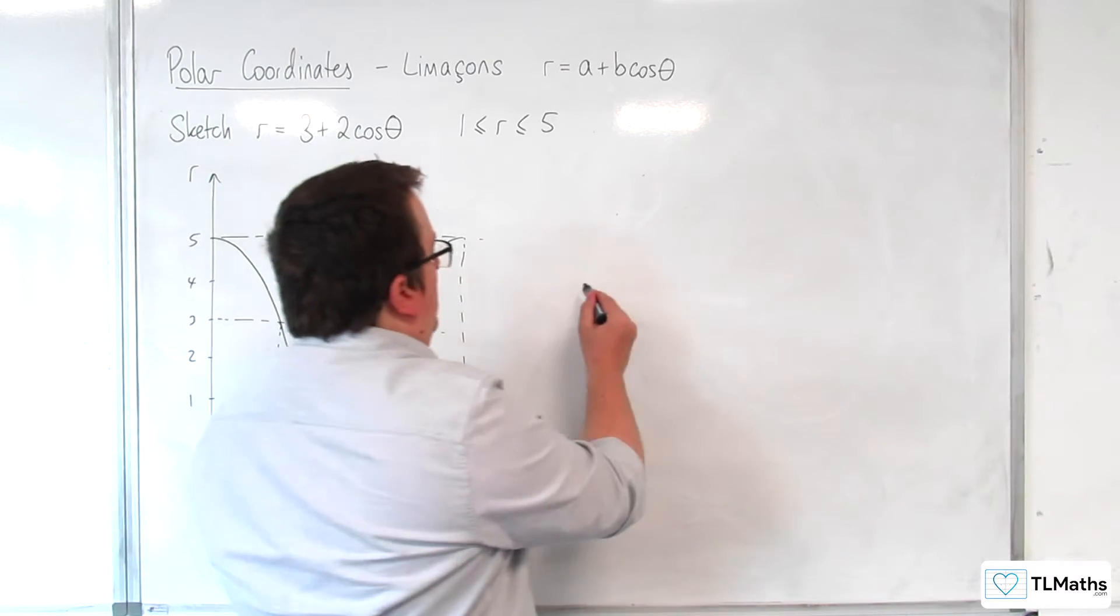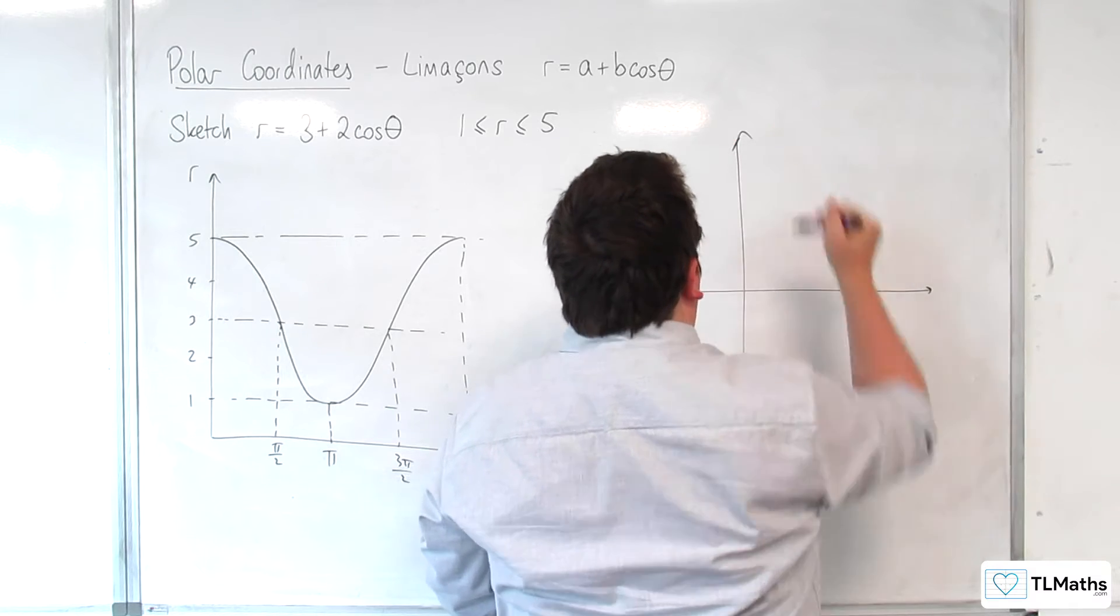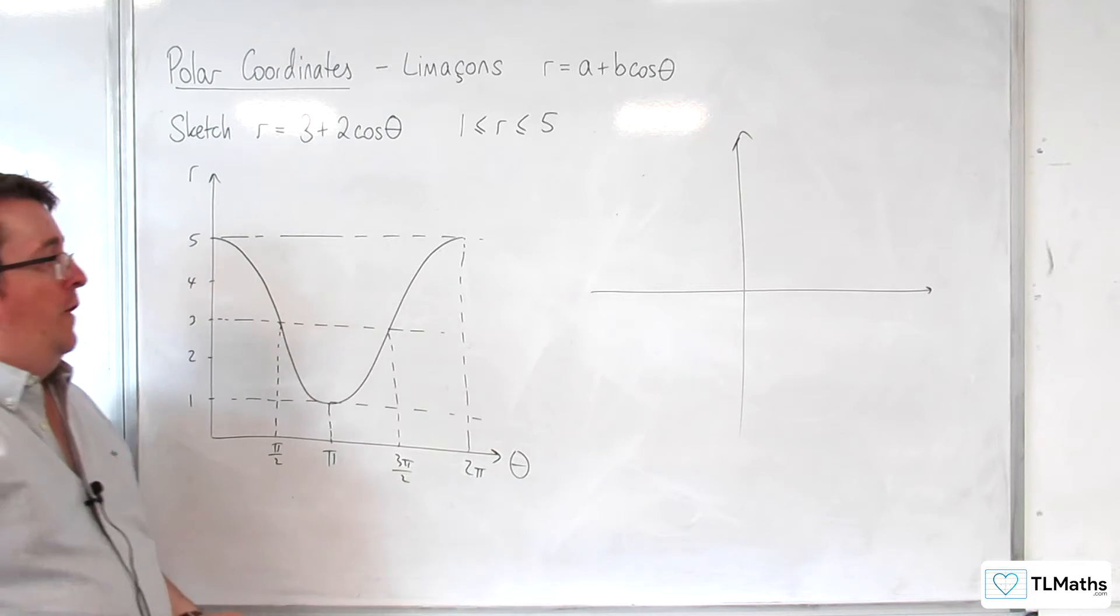Right, so let's sketch the polar curve. So when theta is 0, r is 5.